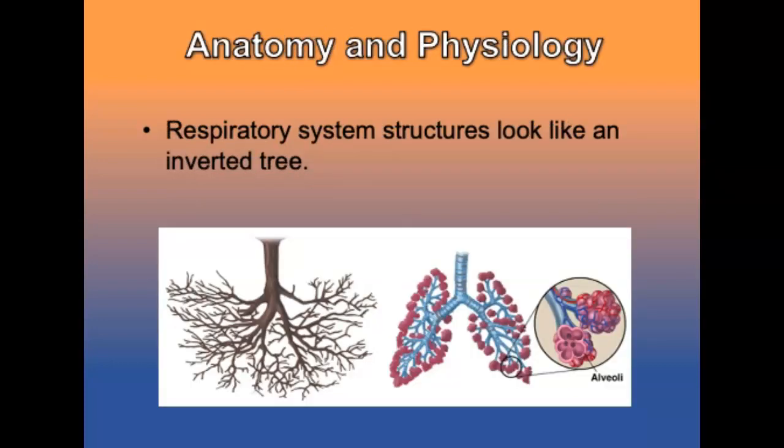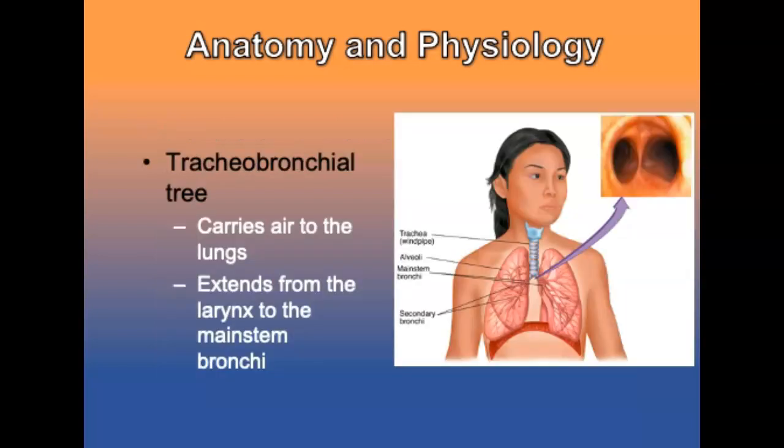Let's talk about the anatomy and physiology. The primary structures are like an inverted tree, where the trachea represents the trunk and the alveoli represent the leaves. The trachea is the windpipe, the trunk of the tracheobronchial tree. It carries air to the lungs and extends about four to five inches from the larynx to the right and left mainstem bronchi.